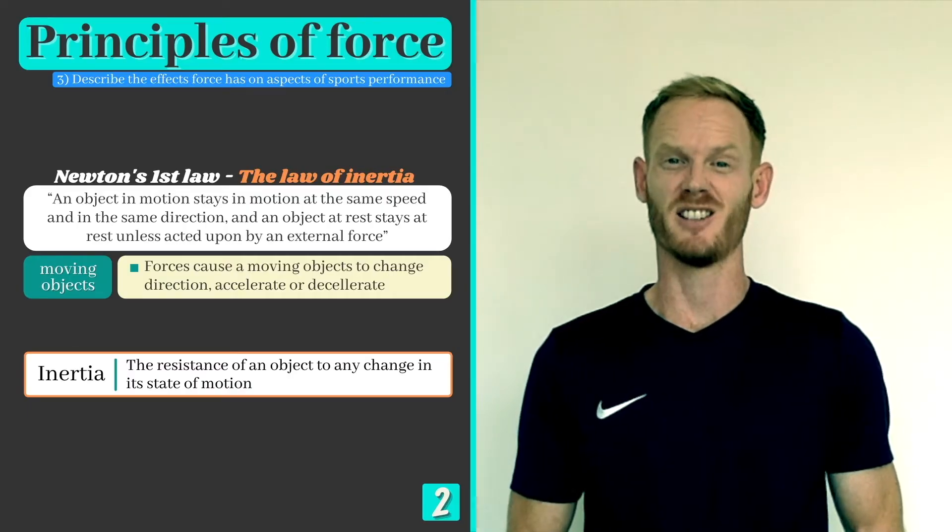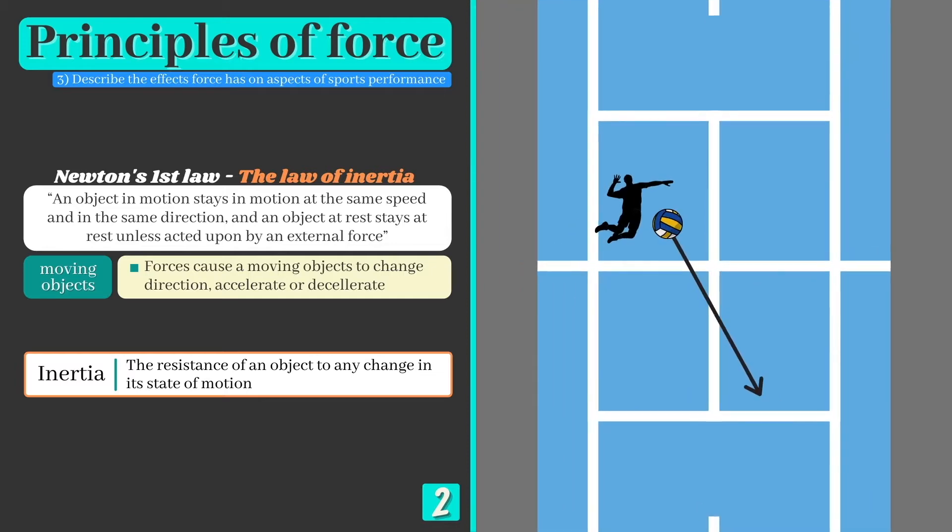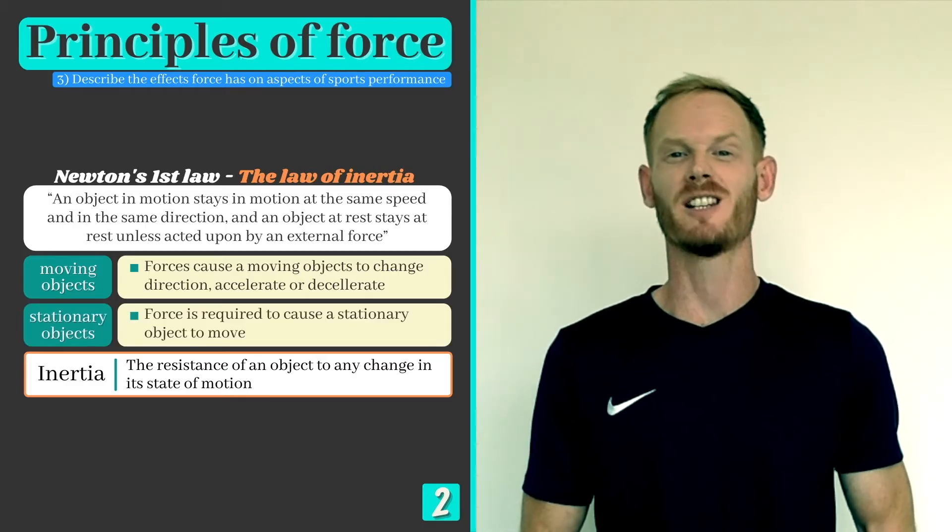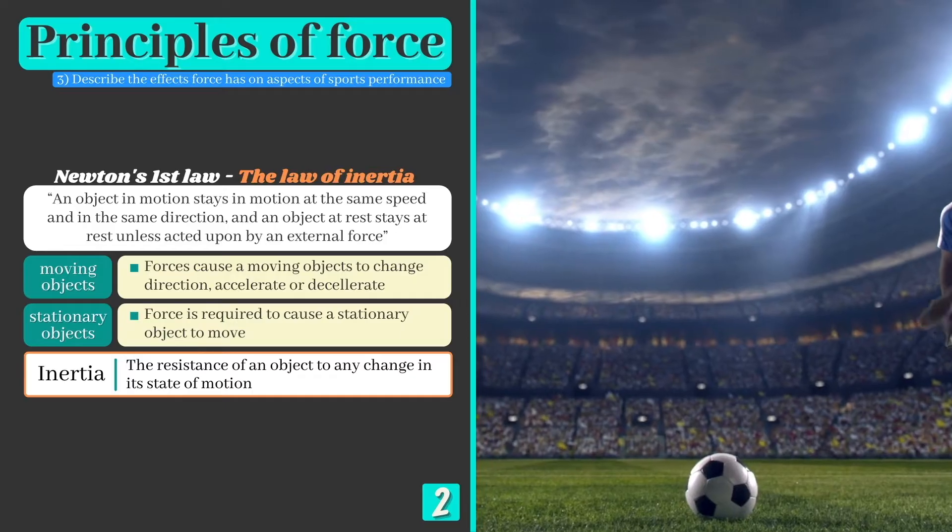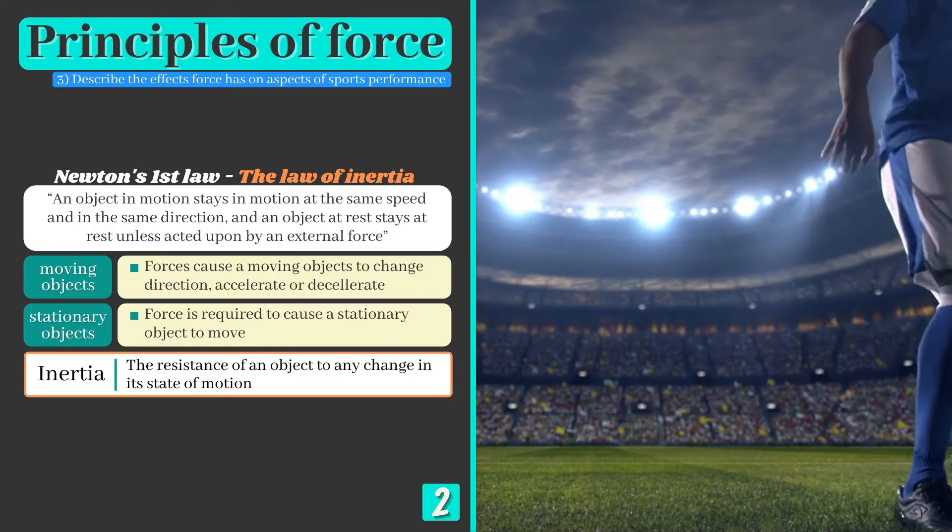This means that when a volleyball player performs a spike, the ball will move in a straight path and at a constant speed until it hits the ground, makes contact with the net, or is blocked by an opponent. The second part of the law states that a force is required to move a stationary object, which is why a football will remain on the spot until an external force is applied by the penalty taker.